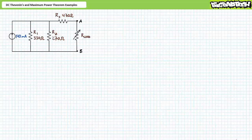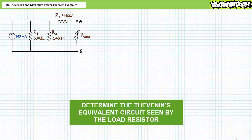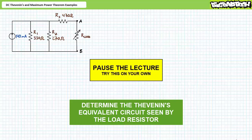Our next illustrated example problem features a series-parallel combination of four resistive elements and a current source. Stage one necessitates we solve for the Thevenin's equivalent circuit seen by the variable load resistor, RLOAD. Once we've got these values, we move on to stage two and examine power transfer for this circuit. By all means, pause the lecture and try stage one on your own. If you're tracking, you should have obtained the following results.